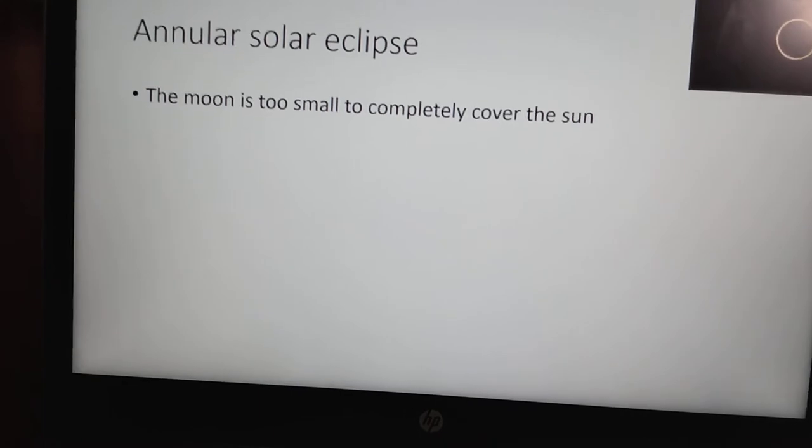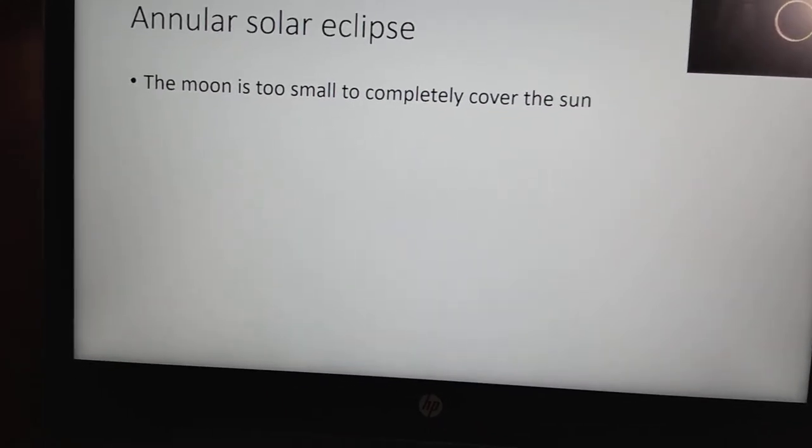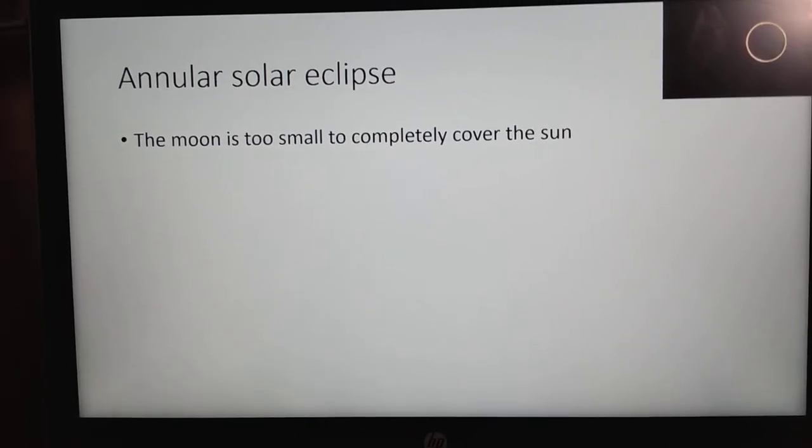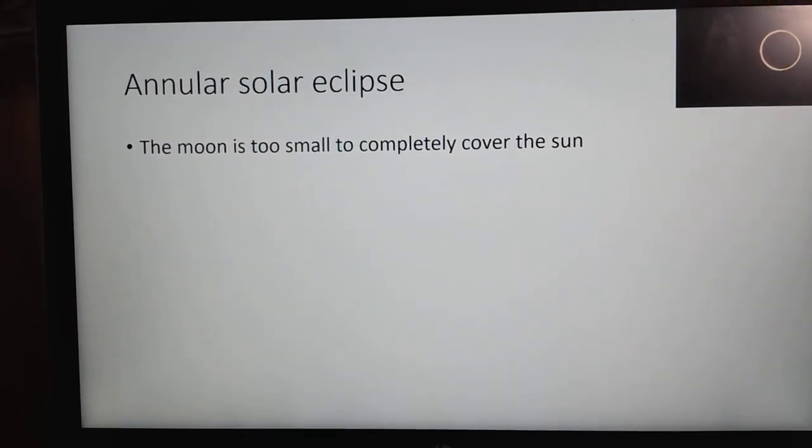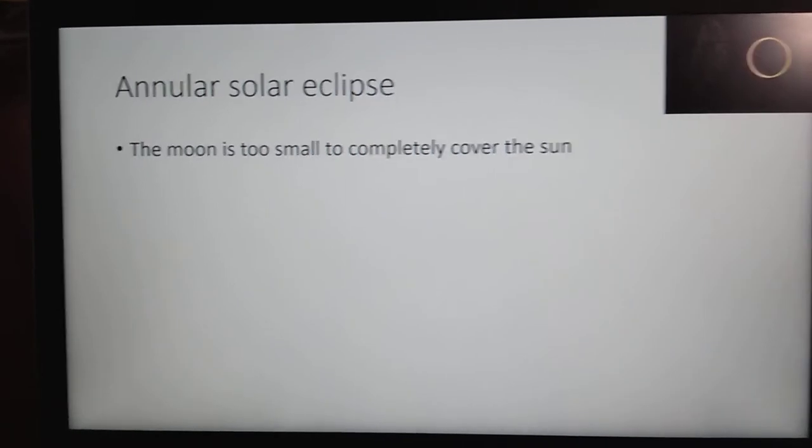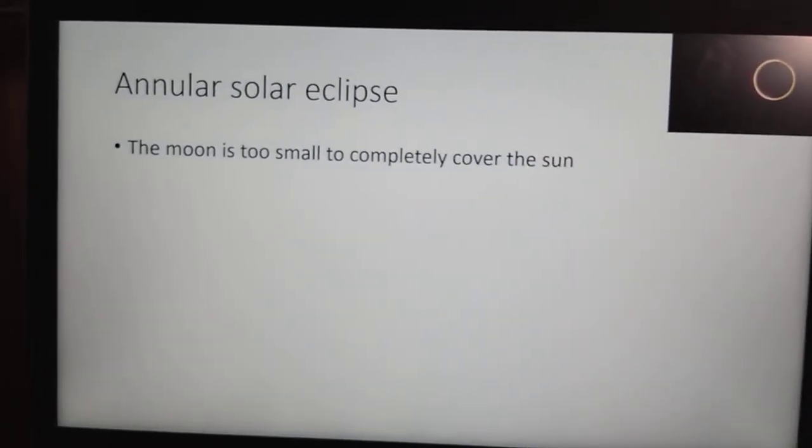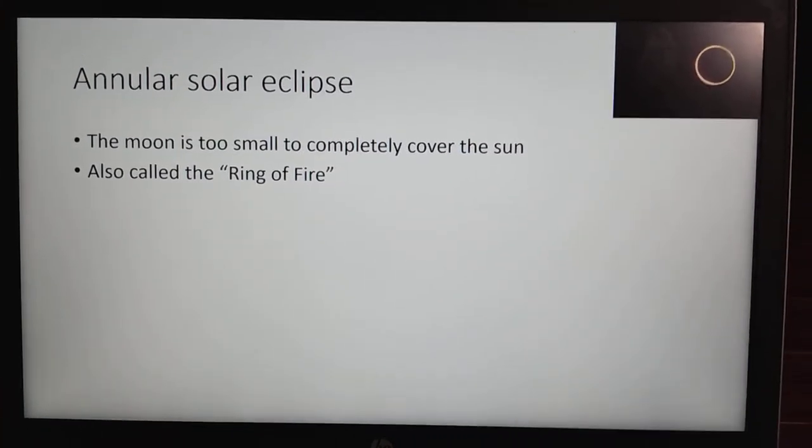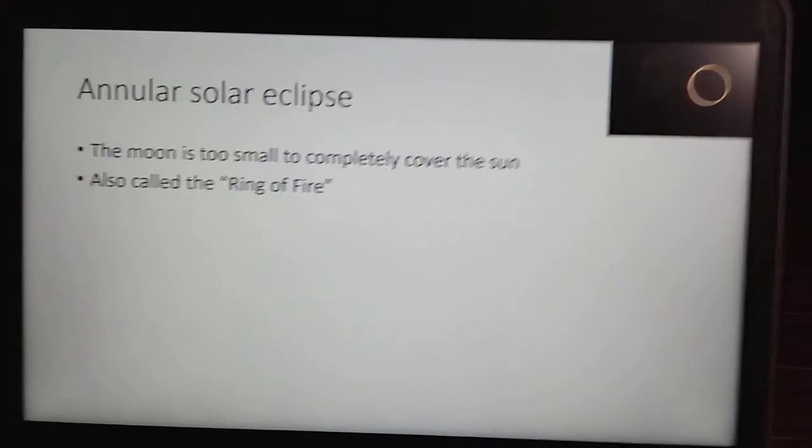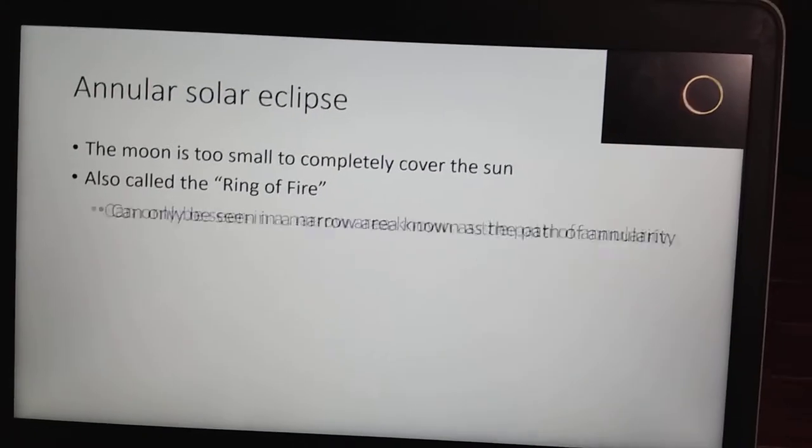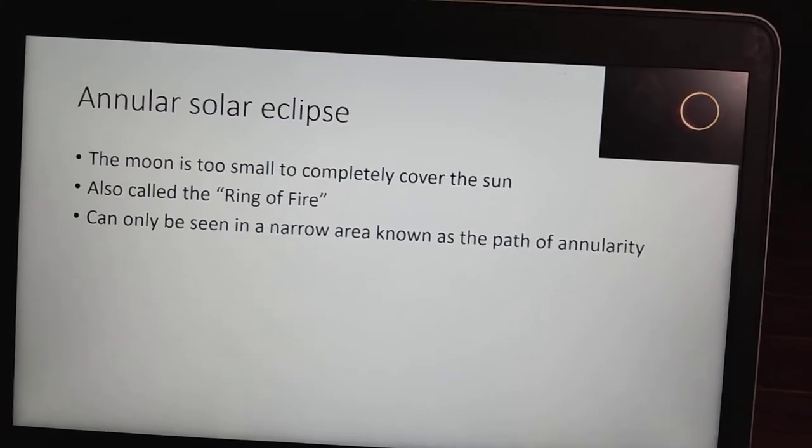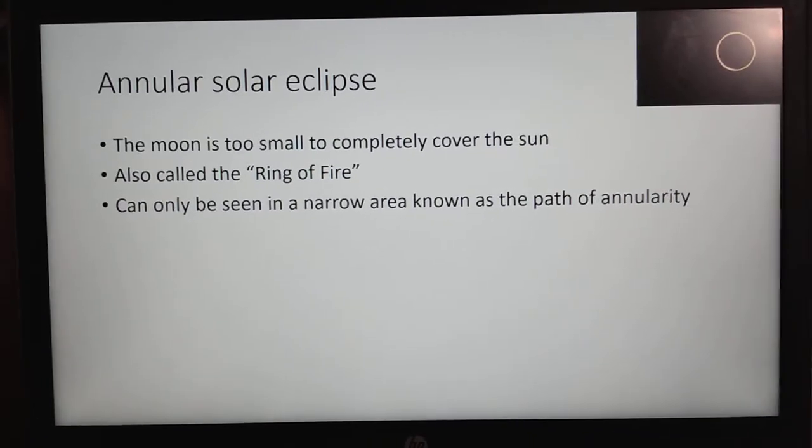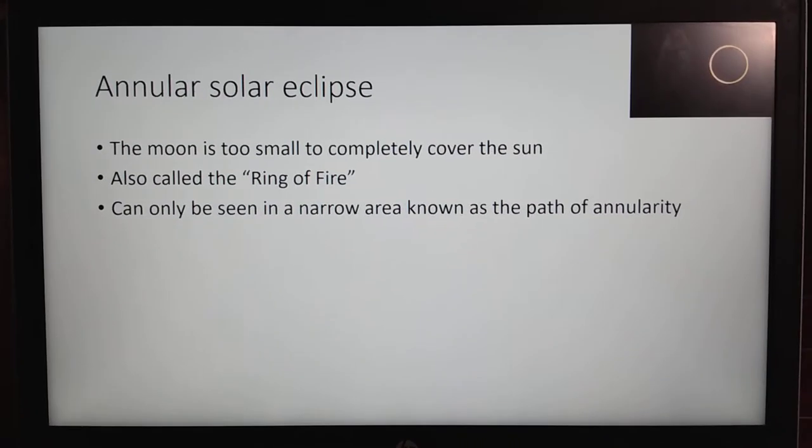And when this eclipse is at its maximum point, the moon appears to have a ring around it. That's what gives this eclipse its nickname, the Ring of Fire. And it can only be seen in a narrow area known as the Path of Annularity. Anybody who is not in this path will only see a partial eclipse.